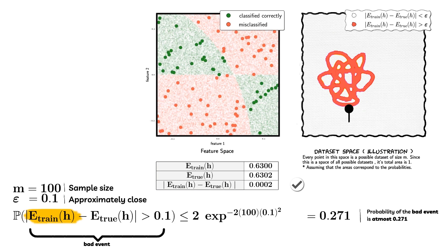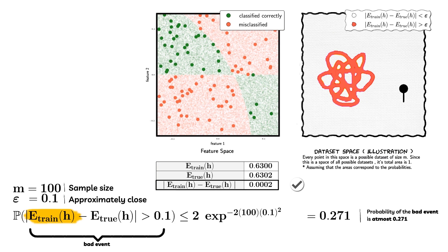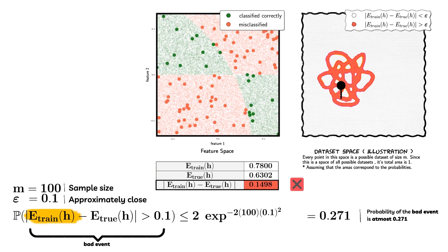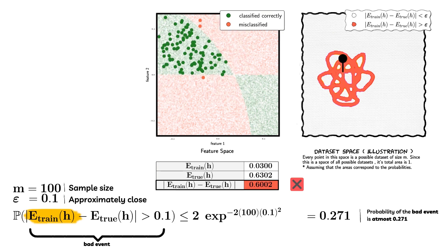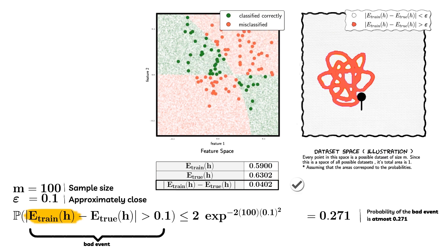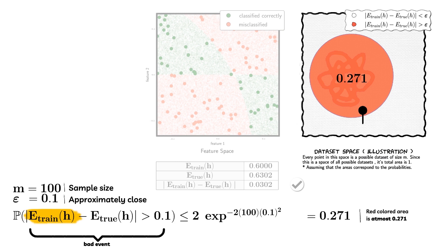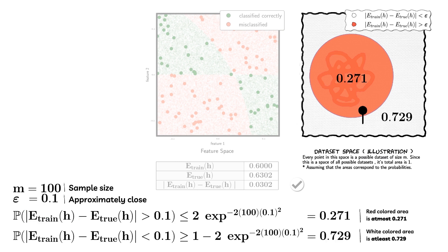To understand this better, let us look at the data set space. Every point in this space is a possible data set of size M. This is a very high-dimensional space. These are some good events where the data set is such that the difference between the training error and the true error is less than epsilon. These are some bad events where the difference is more than epsilon. In the data set space we will color all misleading data sets red. Getting such misleading data sets is possible but not probable. Hoeffding's inequality tells us that the total red area is going to be at most 0.271, assuming the area of the data set space is one.